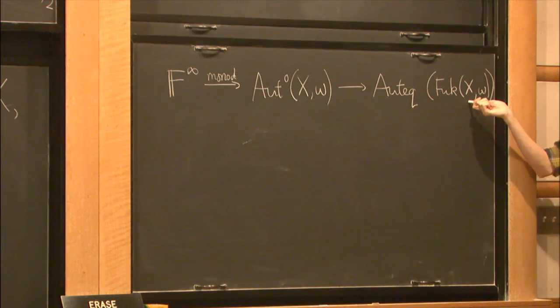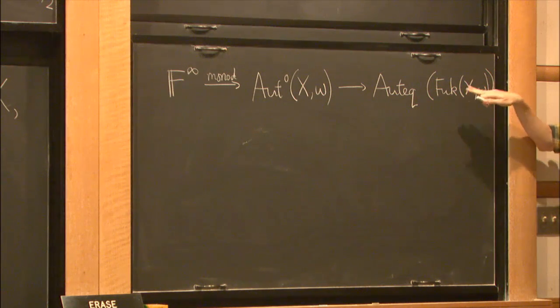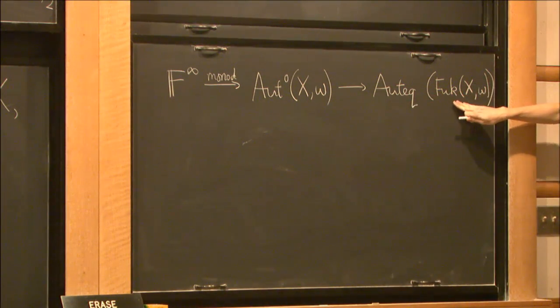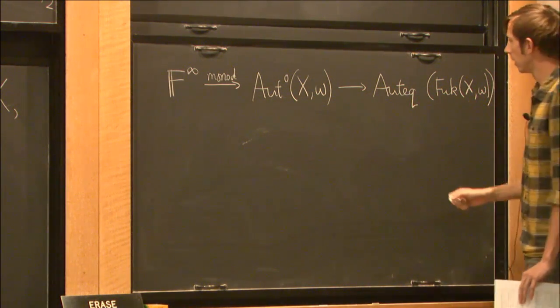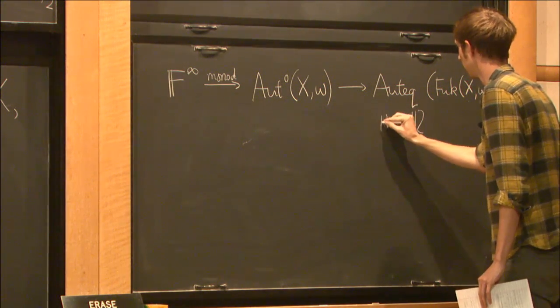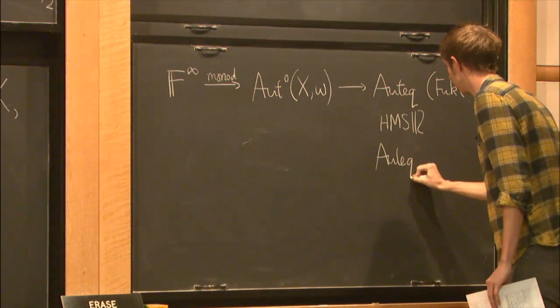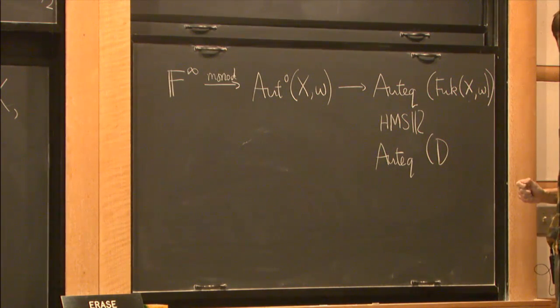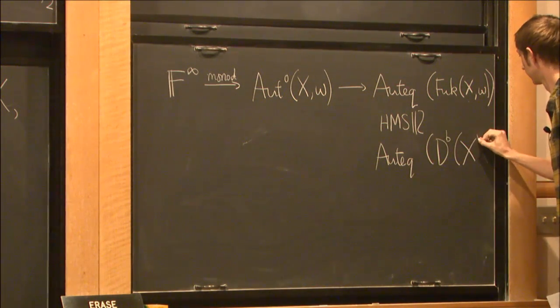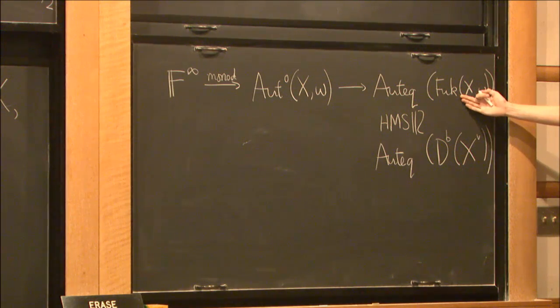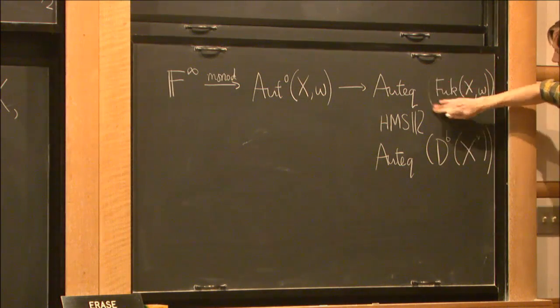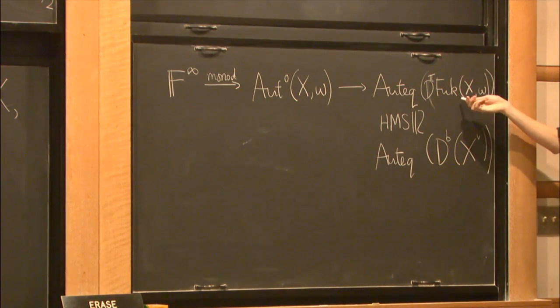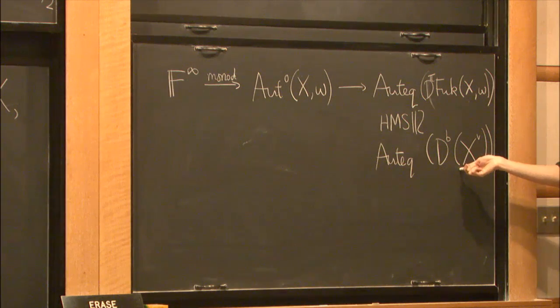the action of this group on the Fukaya category of X equipped with this form. So this is a certain invariant of our symplectic manifold which is a category, and elements of the symplectic mapping class group act by auto equivalences of this category. We equate this... Do you think now about a grand Schottky kind of thing? Yes. And the way we understand this thing that a priori looks pretty complicated is we say by homological mirror symmetry we're able to equate... I should really have put in... put derived there.